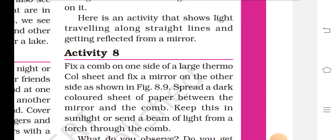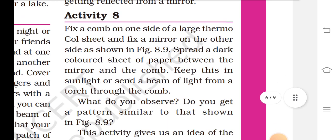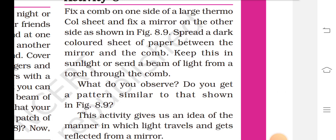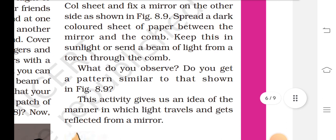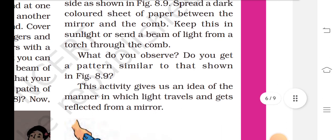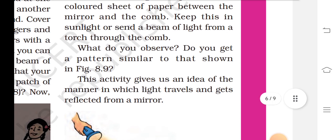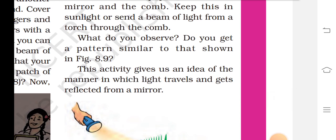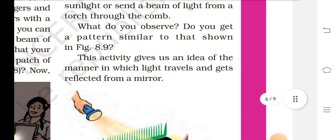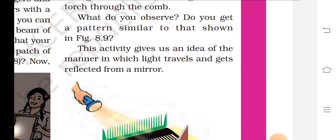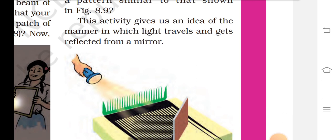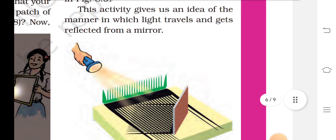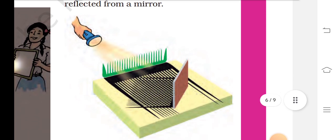Here is an activity that shows light traveling along a straight line and getting reflected from a mirror. Activity 8: Fix a comb on one side of a large thermocol sheet and fix a mirror on the other side as shown in Figure 8.9. Spread a dark colored sheet of paper between the mirror and the comb. Keep this in the sunlight or shine a beam of light from a torch through the comb. What do you observe? Do you get a pattern similar to that shown in Figure 8.9? This activity gives us an idea of the manner in which light travels and gets reflected from a mirror.